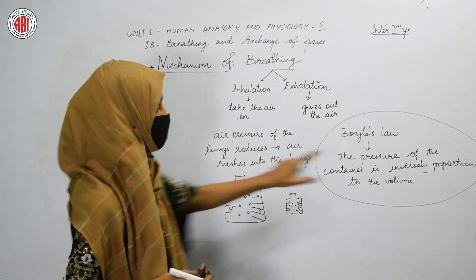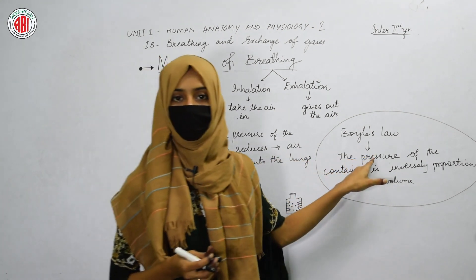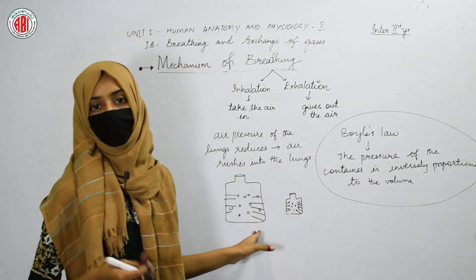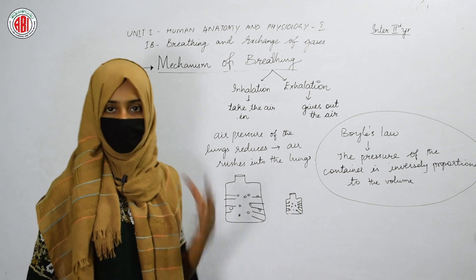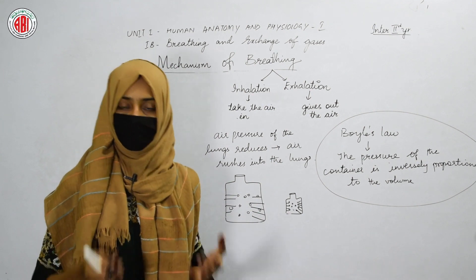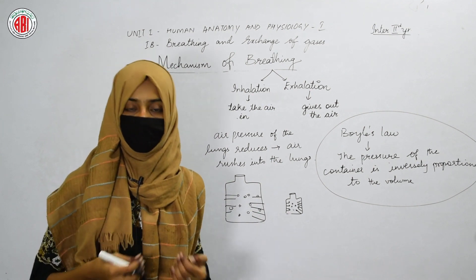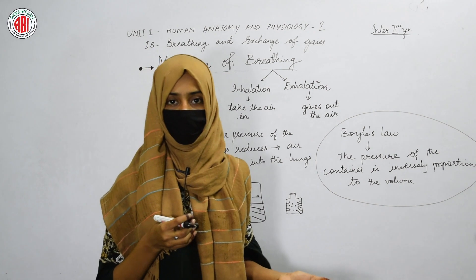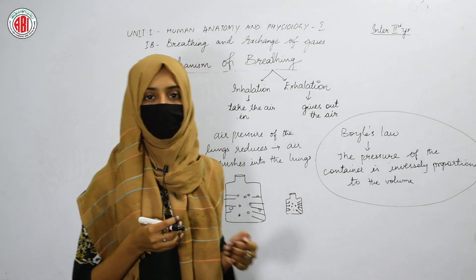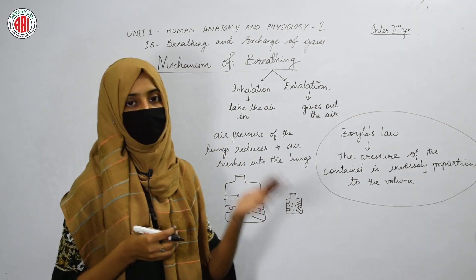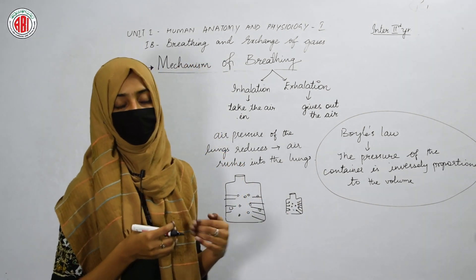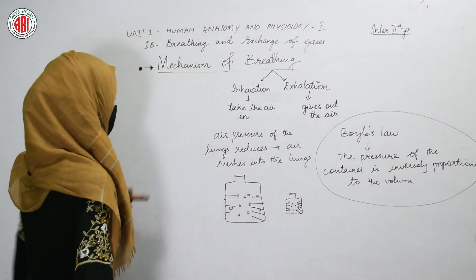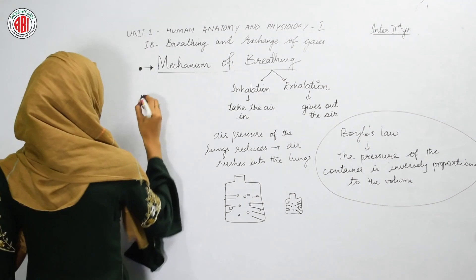Pressure is always inversely proportional to volume. This is what happens in the lungs — the difference between the lung air pressure and atmospheric air pressure is what causes the air to move. The air rushes into our lungs. Let us see how it happens.